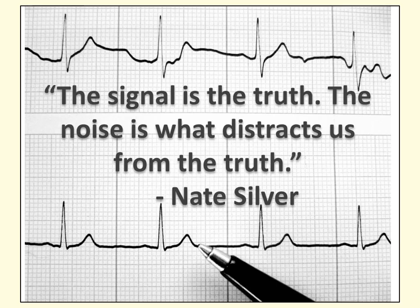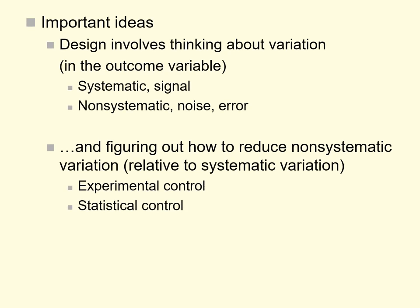That applies to the research we do as well. If you have columns of data and you're trying to discern the relationship between predictor and outcome variables, there's a true signal you're trying to discover, but also noise — the effects of confounding variables — which you might try to reduce, remove, or control. Design involves thinking about variation in the outcome variable, trying to discern systematic variation or signal from non-systematic variation or noise, and figuring out how to reduce unsystematic variation relative to systematic variation through experimental or statistical control.